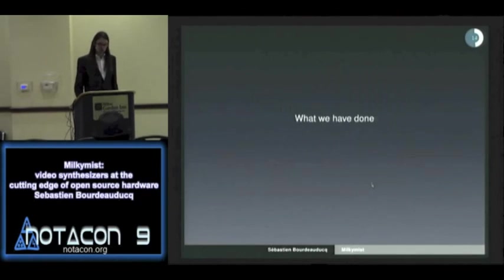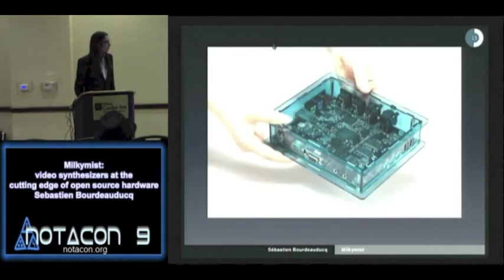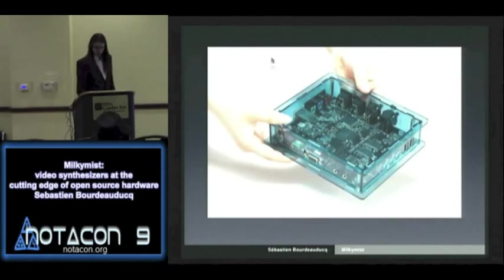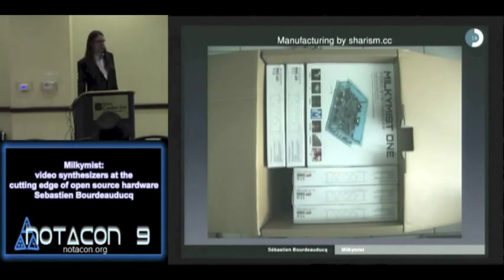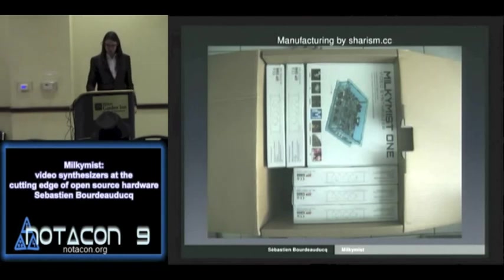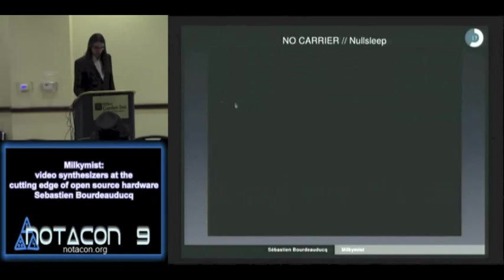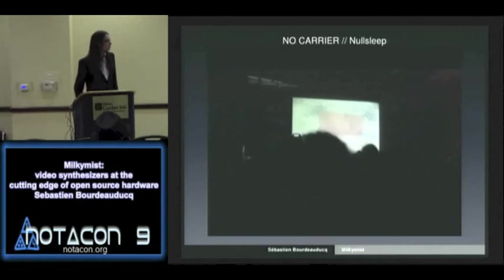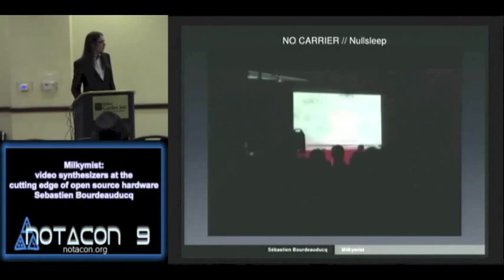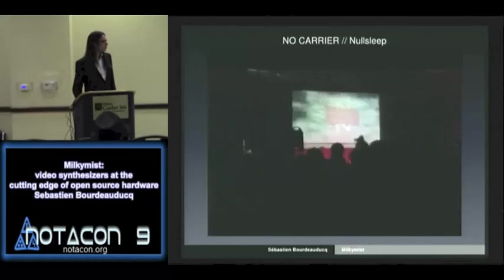So what have we done in five years? We designed the system-on-chip implemented in an FPGA, designed a PCB layout, and we are manufacturing our own PCB. We have a mechanical layout — basically a finished product. We have people manufacturing it. You can buy it online, hook it up, and some VJs are actually using it.